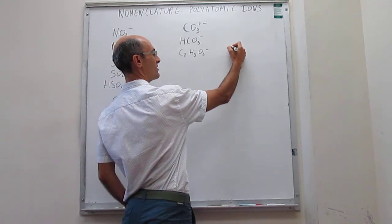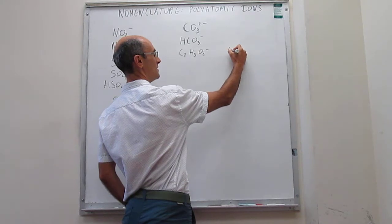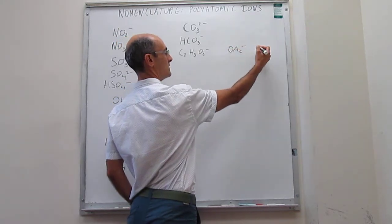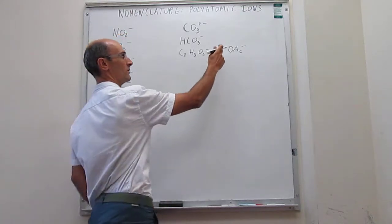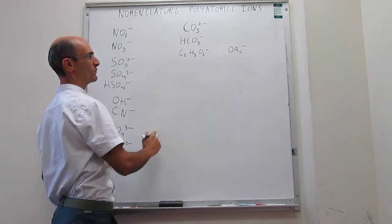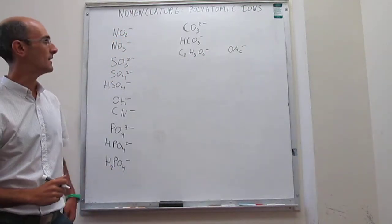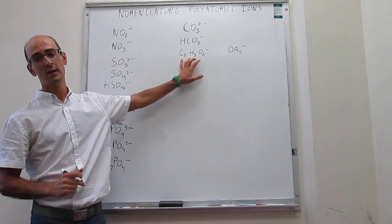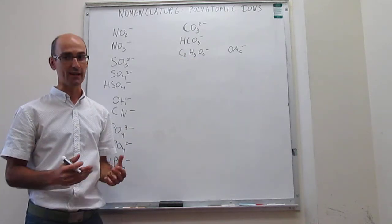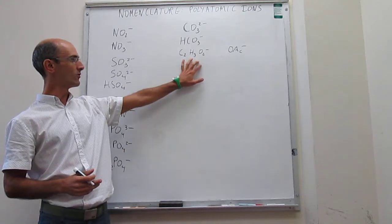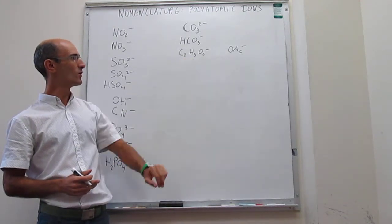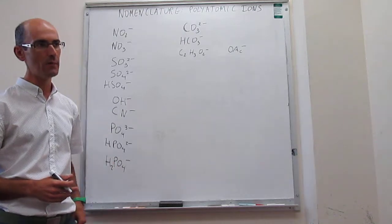But generally, we will actually write it as CH3COO-. That would be the most common way to name it so that we don't have to remember all of this stoichiometry that we have right here. This will be very important when you study organic chemistry. But for now, we simply say that this is an organic anion and we call it acetate.